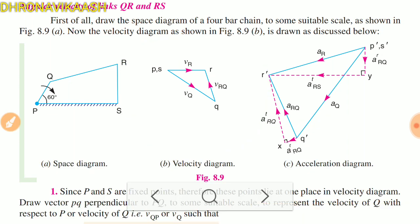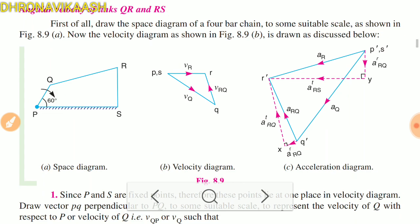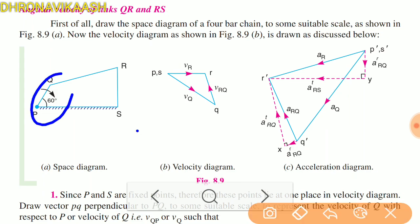Acceleration diagram: first, for the input link, we calculate the radial acceleration. The radial acceleration formula gives us A^r_PQ.